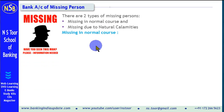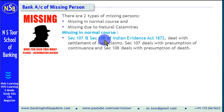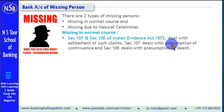First, we shall discuss about the person who is missing in normal course. When we talk about a person missing in normal course, we have to follow the provisions of the Indian Evidence Act 1872. According to Section 107 and 108 of this Act, the settlement of claims of a missing person's account is to be ensured. Section 107 deals with presumption of continuation of that missing situation, and Section 108 deals with presumption of death.